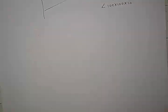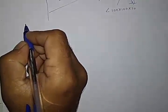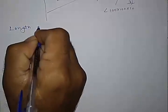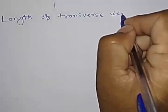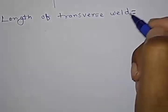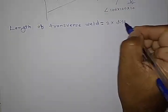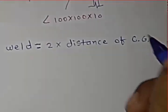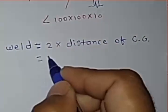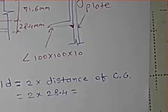So now we can start with the length of the transverse weld. So to calculate length of the transverse weld, let us say, length of transverse weld which is going to be two times the distance of the CG. This would be equal to 2 into 28.4 mm. This is going to be 56.8 mm.